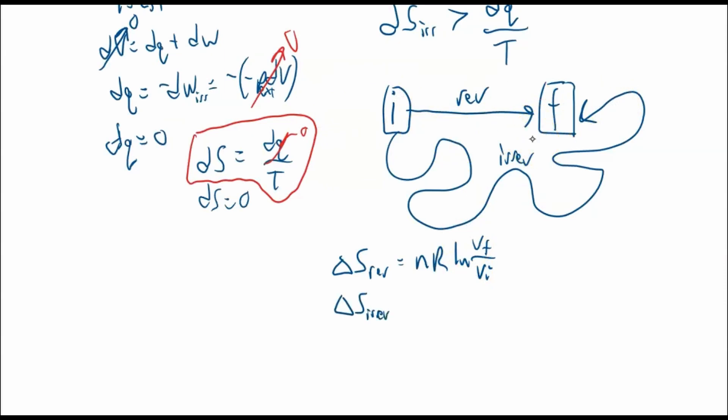And that's the same for this irreversible path. So the change in entropy for the irreversible path equals nR ln V_final over V_initial. This is because entropy is a state function, so we can say that. And this is how we calculate it.